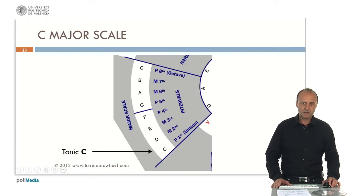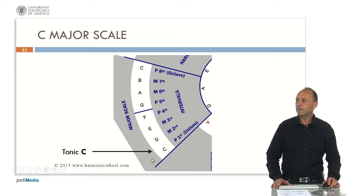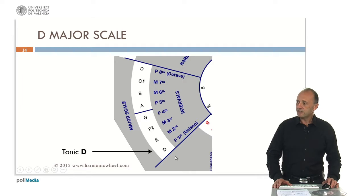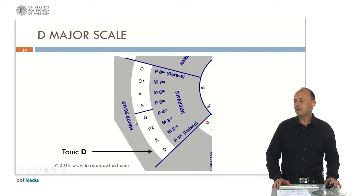The musical abacus gives us all the twelve possible major scales. For example, here we can see the C major scale, whose notes are C, D, E, F, G, A, B, C. But we can choose any other tonic — for example, note D — and the musical abacus gives us its major scale. Here you can see the notes D, E, F sharp, G, A, B, C sharp, and D.